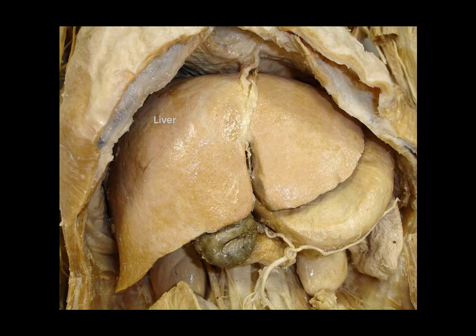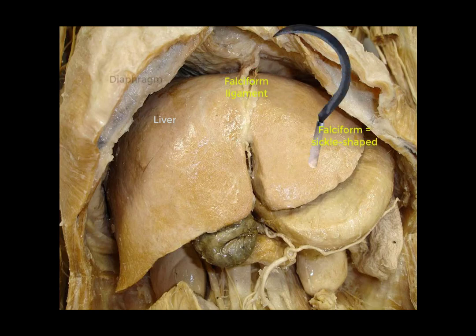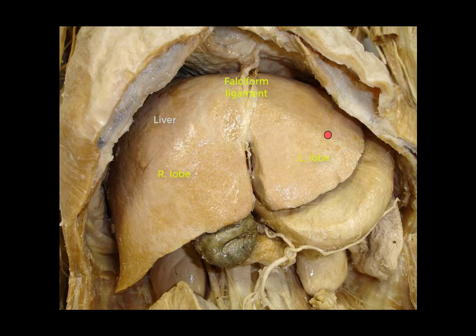The peritoneum is reflected from the liver to form folds and ligaments, such as the falciform ligament, which connects the liver to the diaphragm and the anterior abdominal wall. The attachment of the falciform ligament to the anterior surface of the liver divides the liver into right lobe and left lobe. You can see that the left lobe of the liver looks smaller than the right lobe — this is anatomically speaking.